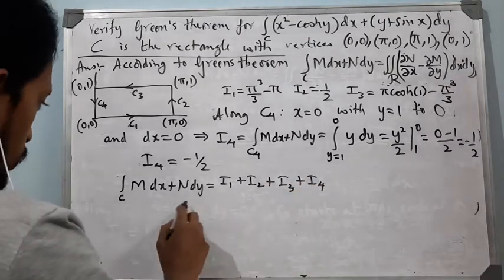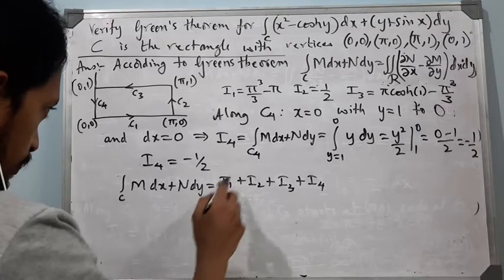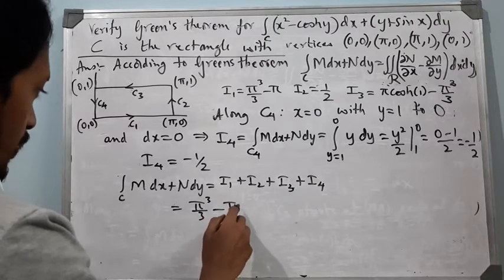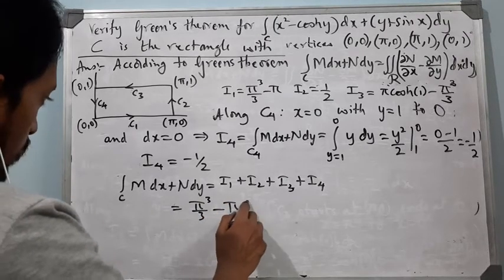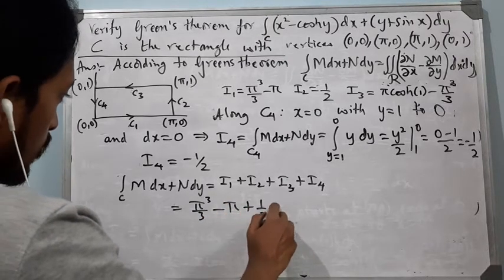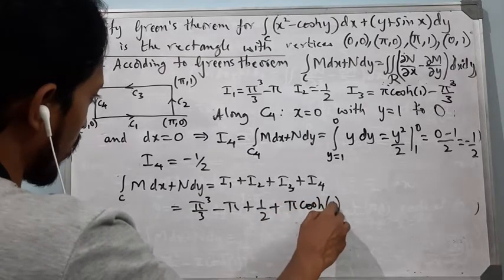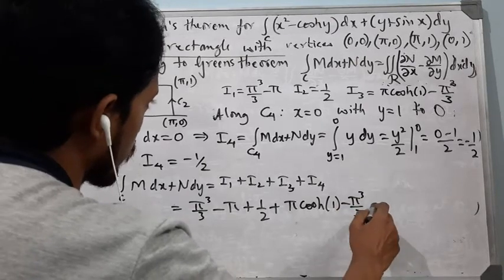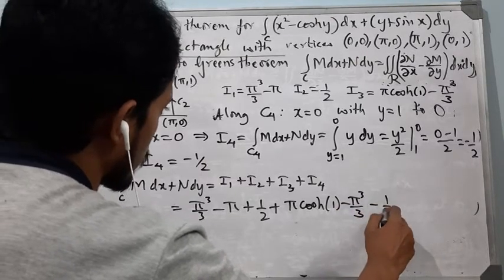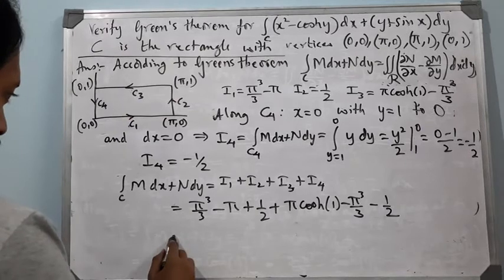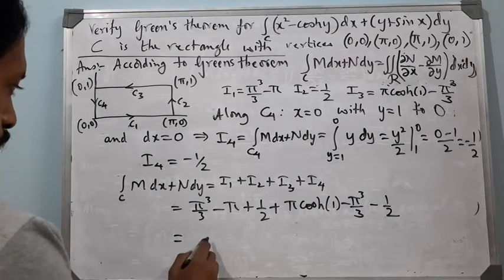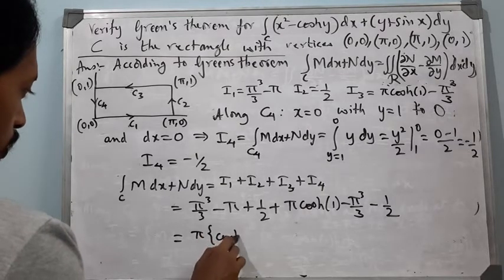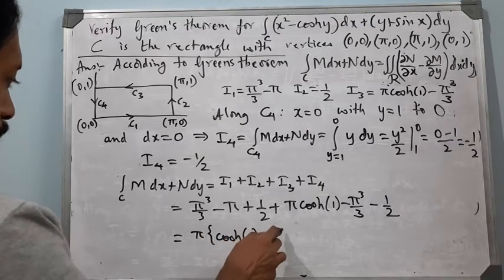Therefore, the total integral along C of M dx + N dy equals I1 + I2 + I3 + I4, which is (π³/3 − π) + 1/2 + (π·cosh(1) − π³/3) − 1/2. This simplifies to π(cosh(1) − 1).